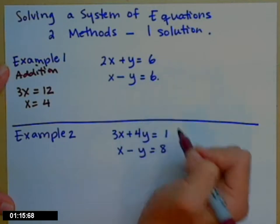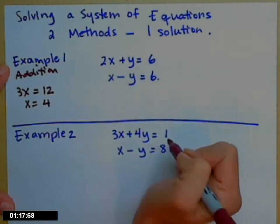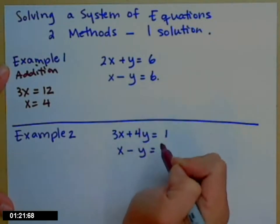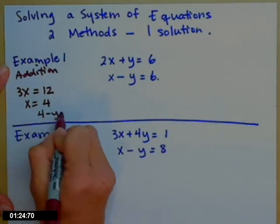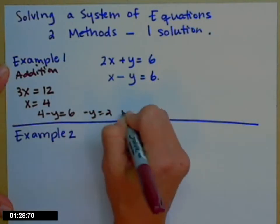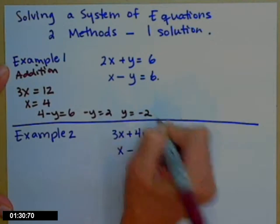If I go back up to one of these equations and it doesn't matter which one, plug in 4 for x, this equation is going to tell me y. So 4 minus y equals 6, so negative y equals 2, y equals negative 2.